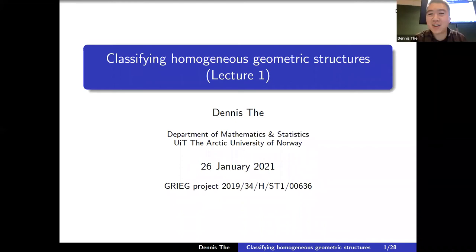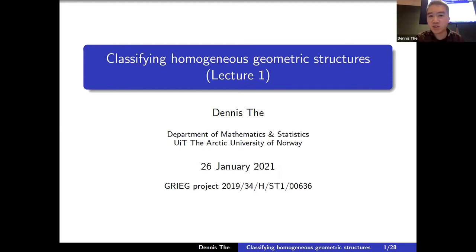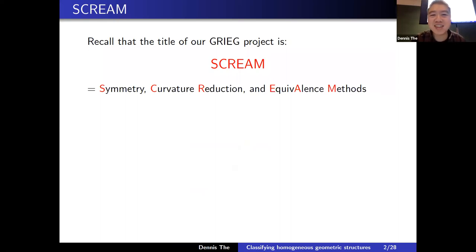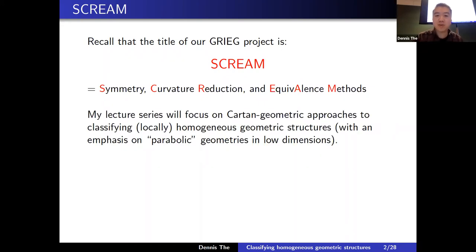Hi everybody. This is the start of a three-lecture series titled 'Classifying Homogeneous Geometric Structures.' Our Greek project is called SCREAM, which stands for Symmetry, Curvature, Reduction, and Equivalence Methods. The focus of this lecture series will be on Cartan geometric approaches to classifying locally homogeneous geometric structures, with emphasis on so-called parabolic geometries in low dimensions.